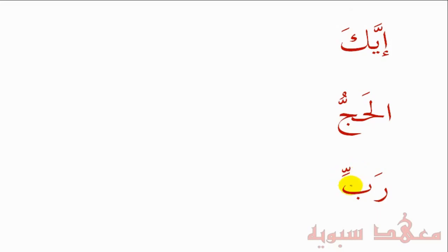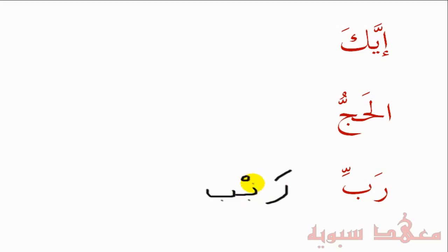It's a Shaddah there — 'Rabbi,' not 'Rabi.' If we dissect this, it's the Ra followed by two Baas: the first Ba takes a Sukun and the second takes a Kasrah, so it's 'Rabbi.' A Shaddah will always give a new syllable to the word, because the new syllable starts between the first and the second letter of the Shaddah. So that's briefly about the Shaddah. Walhamdulillahi Rabbil Alameen.